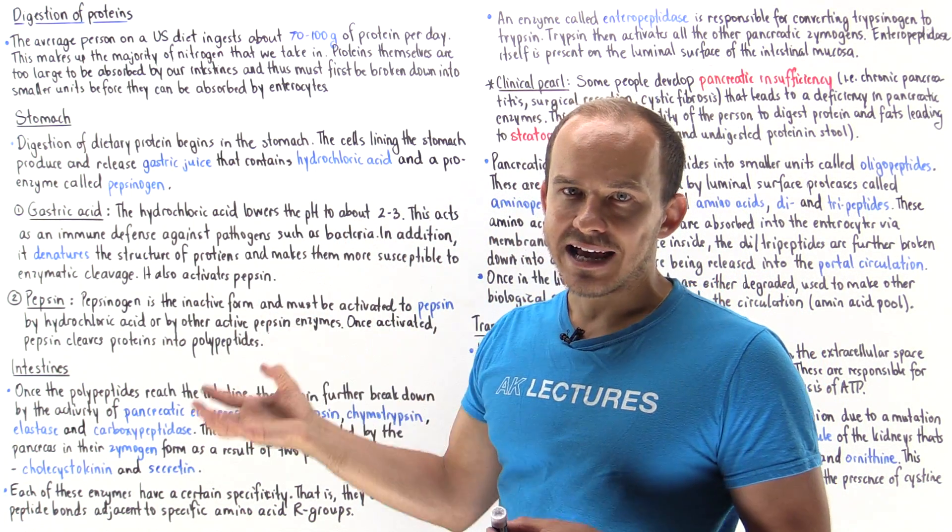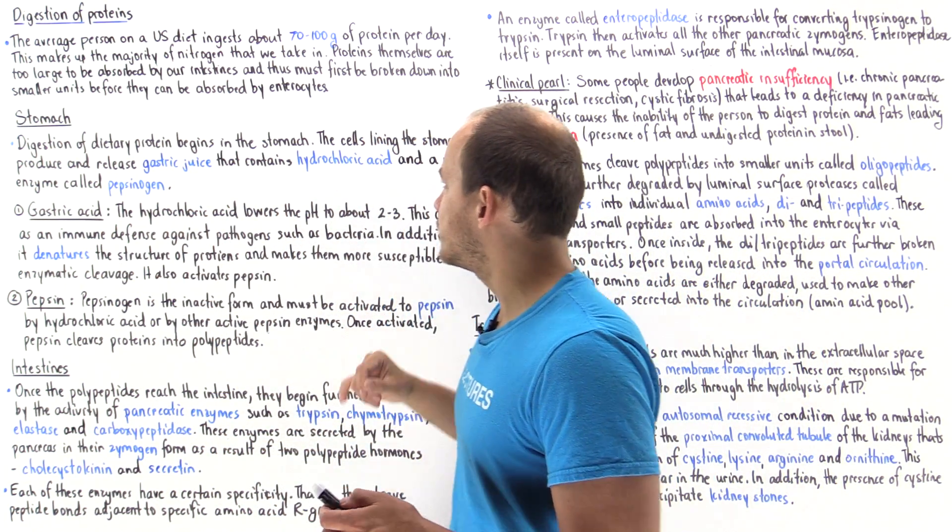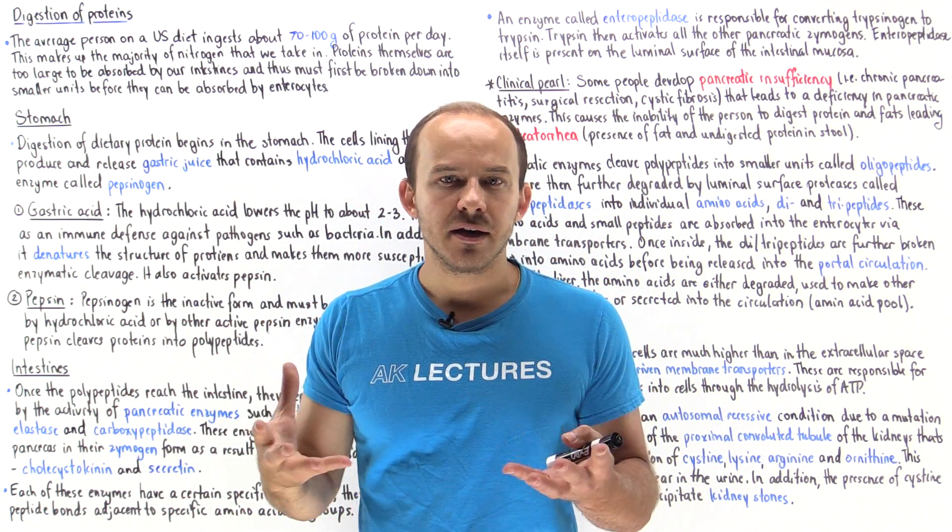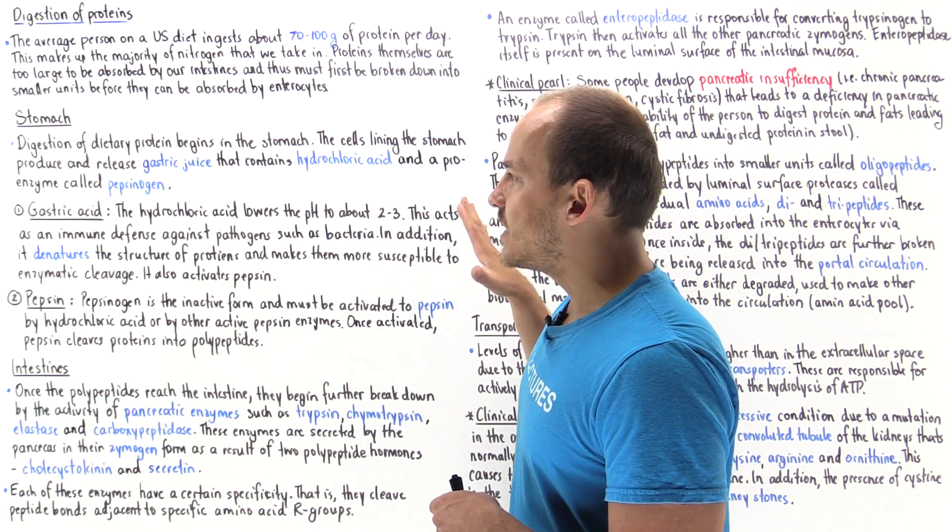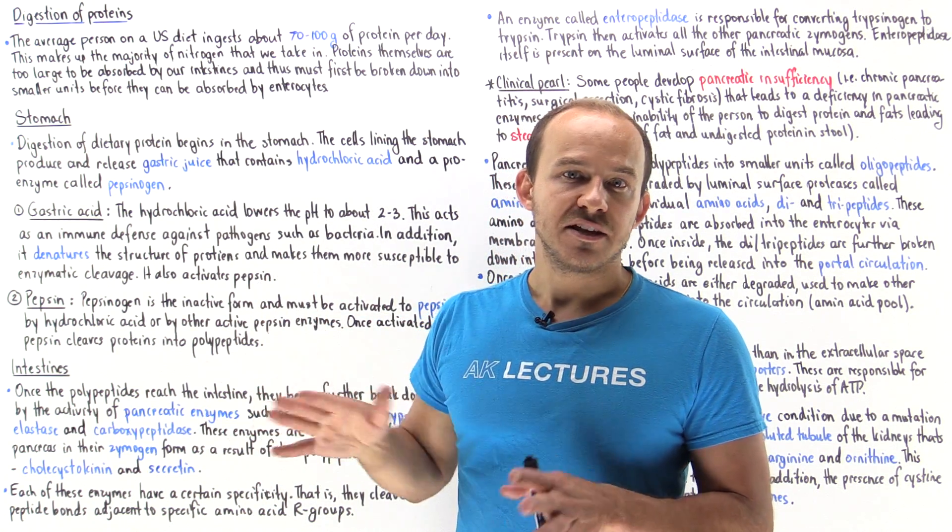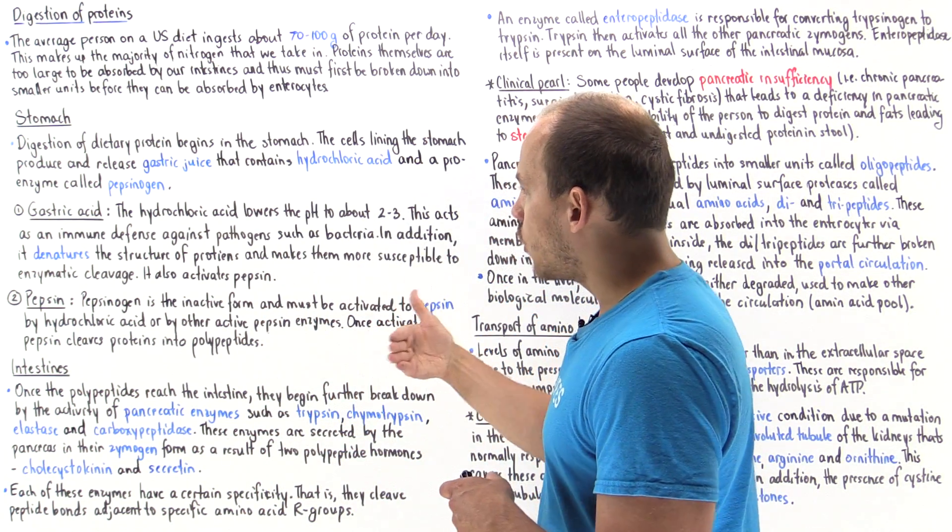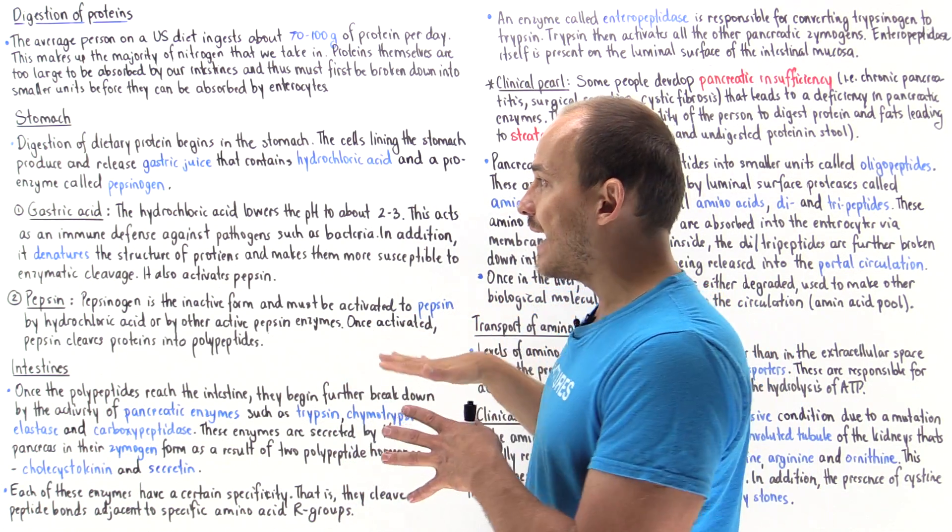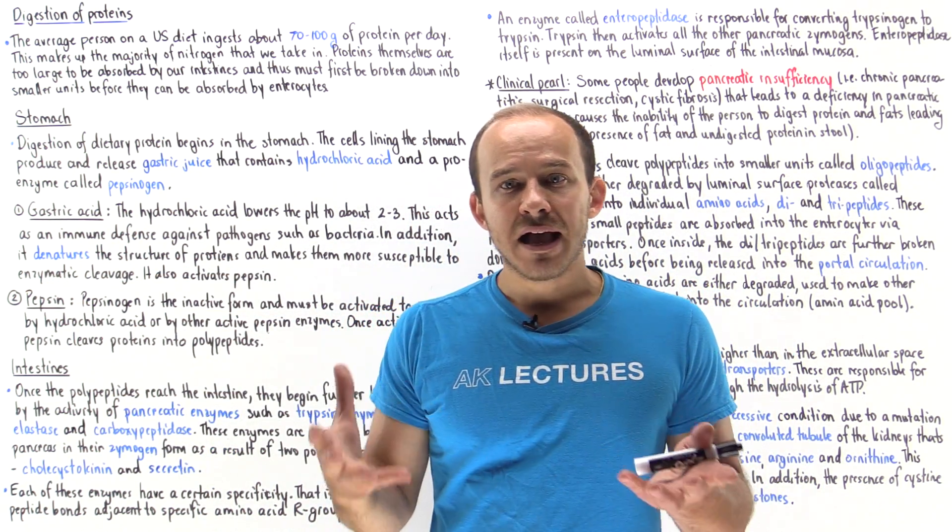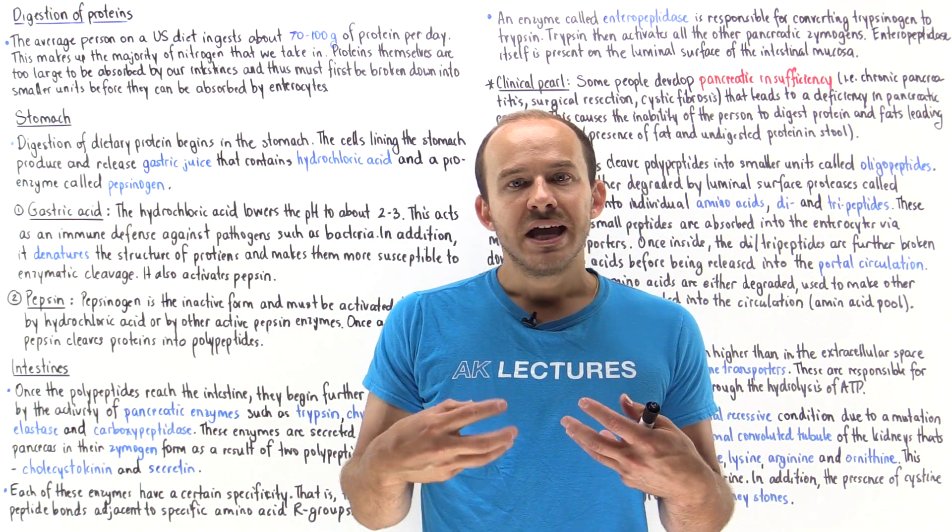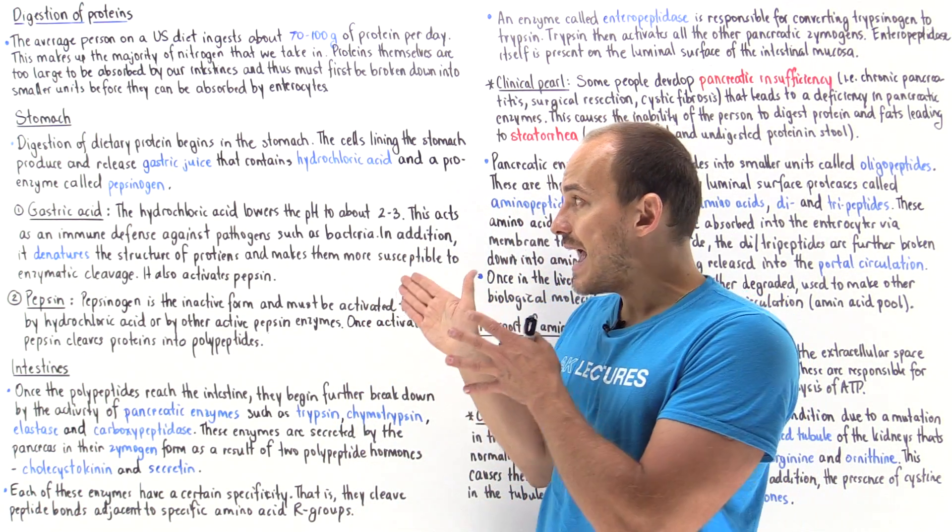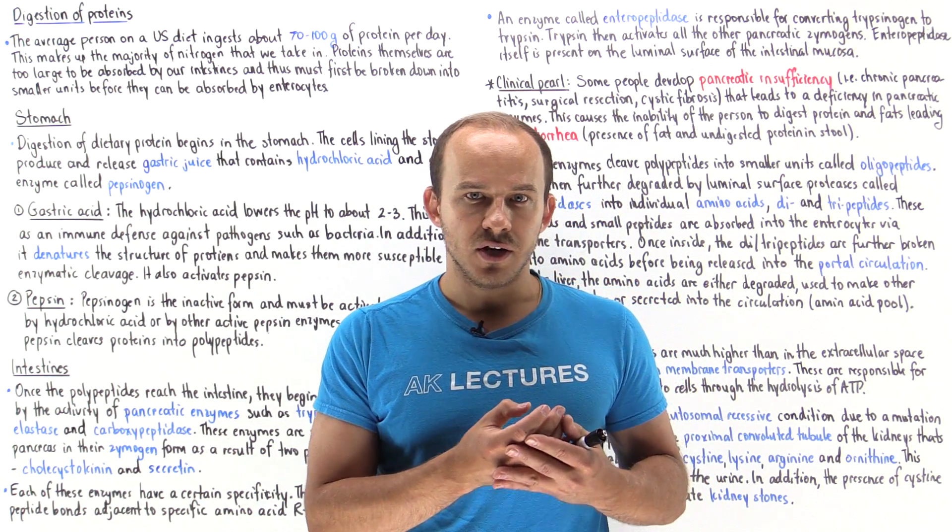Gastric acid is basically hydrochloric acid, and that's released by the parietal cells of the stomach. The hydrochloric acid actually has many roles. It lowers the pH to about two to three, and that basically acts as an immune defense against pathogens such as bacteria. If there is some bacteria present in the food that we ingest, this acid basically kills that bacteria off.